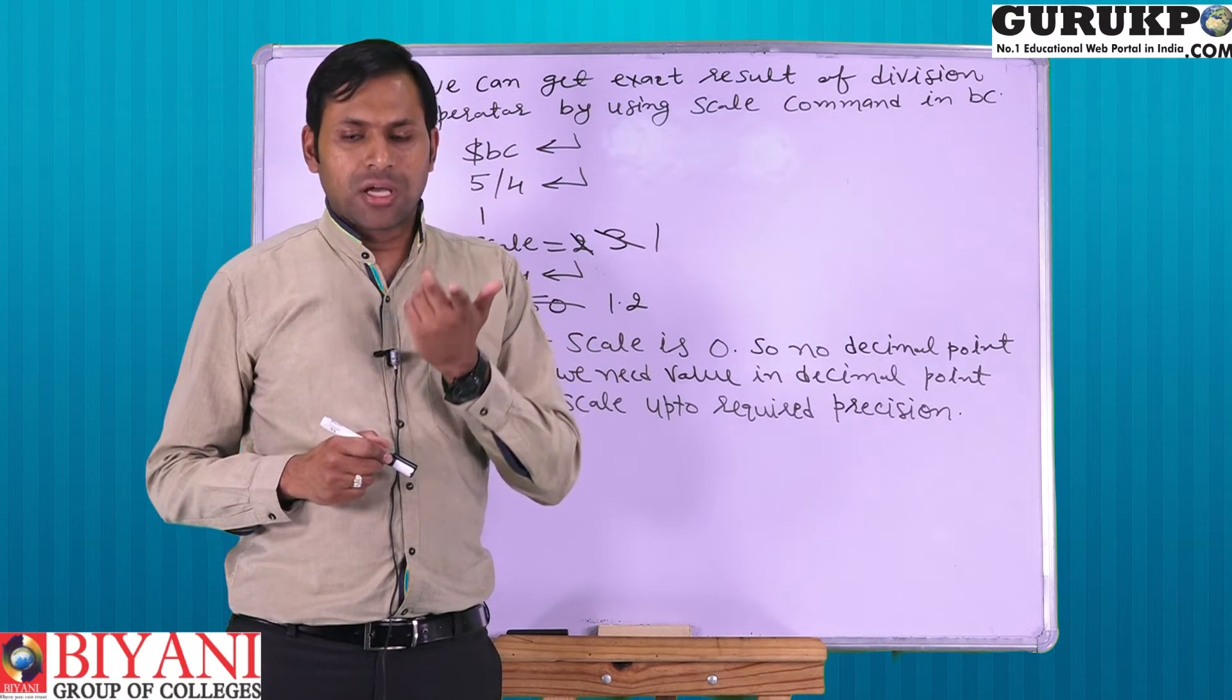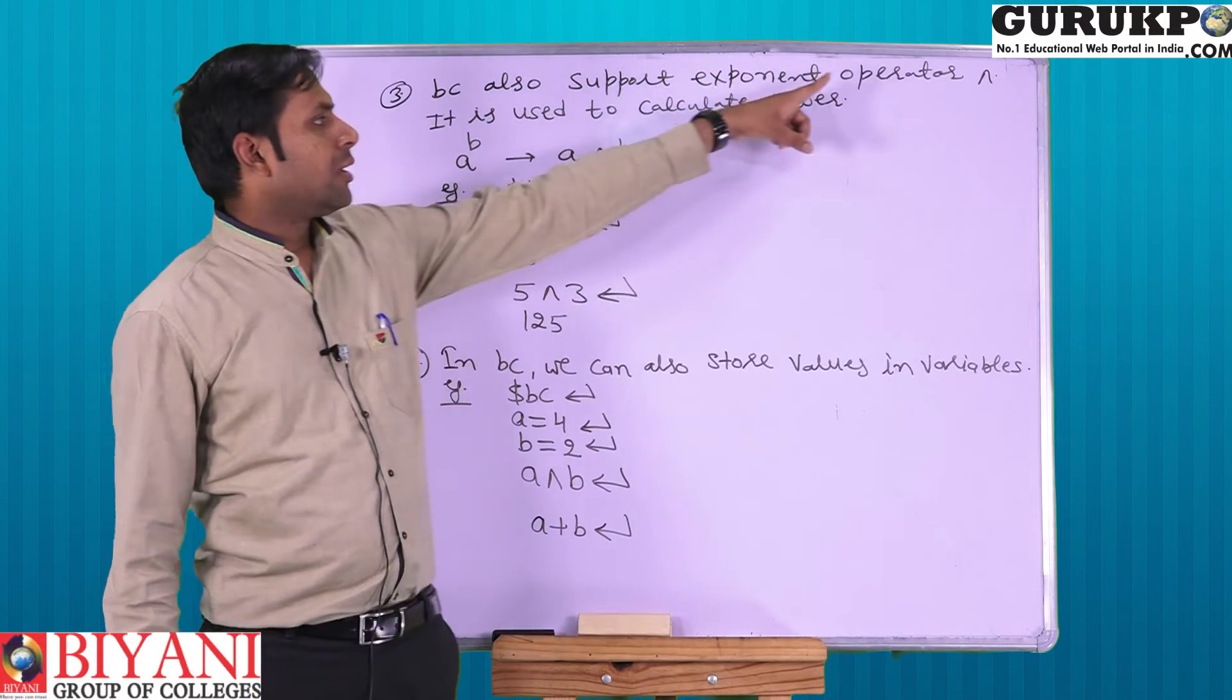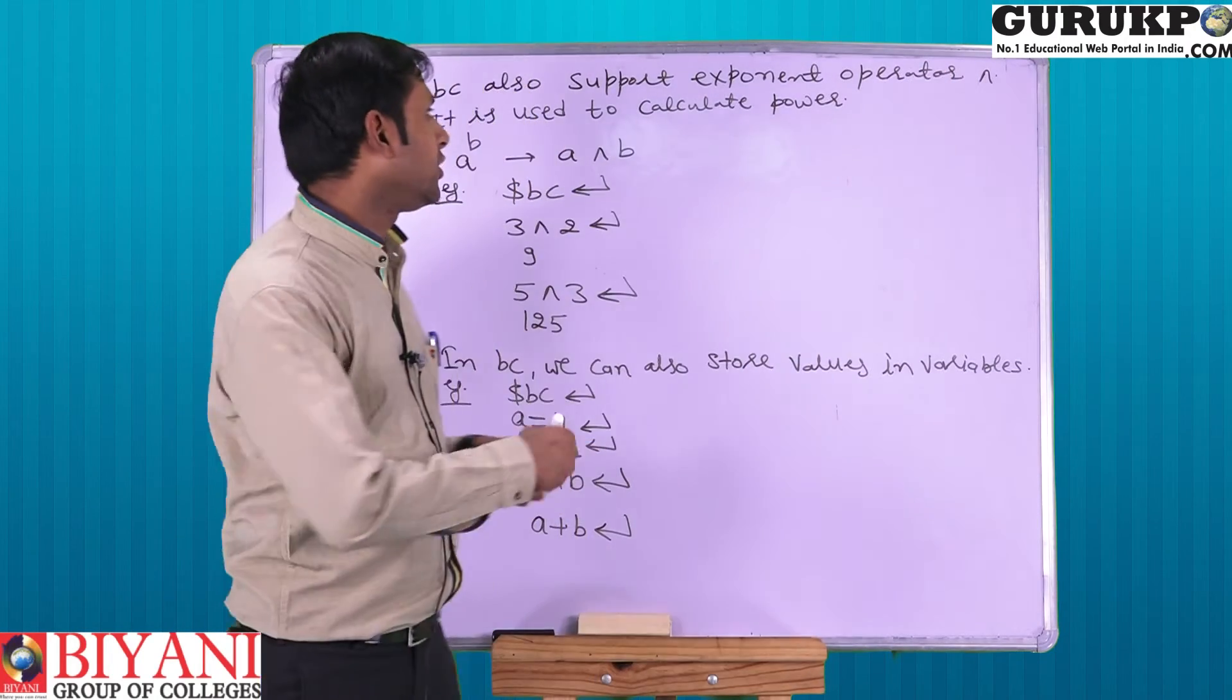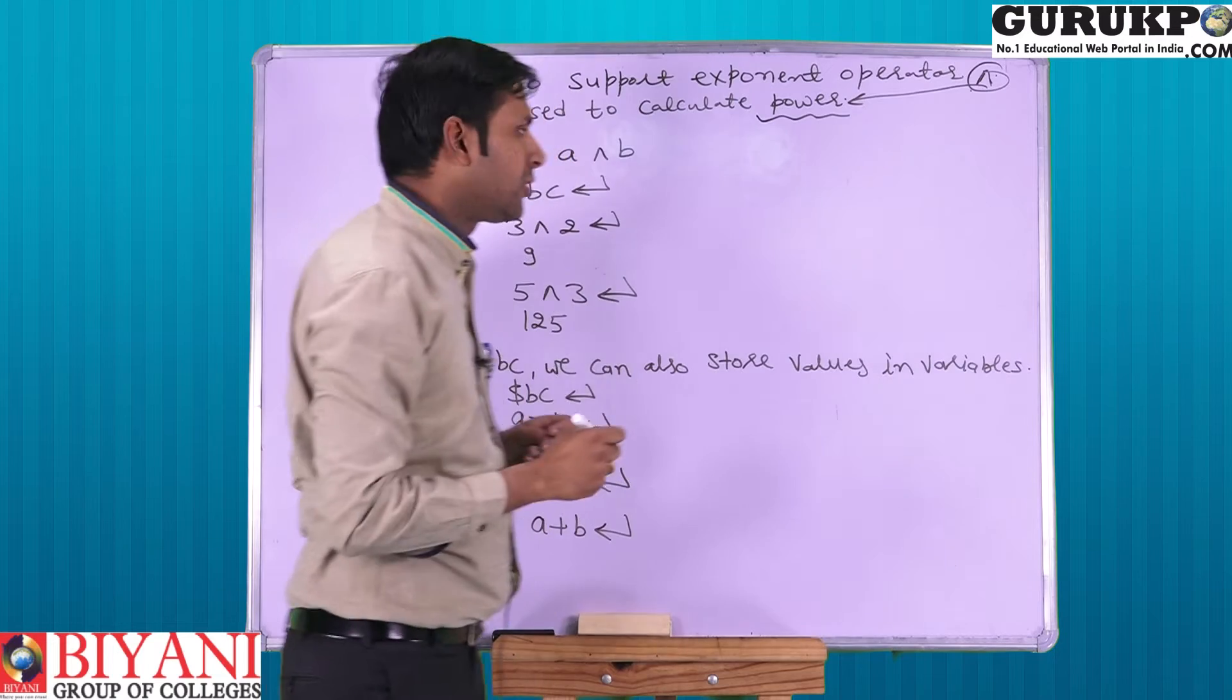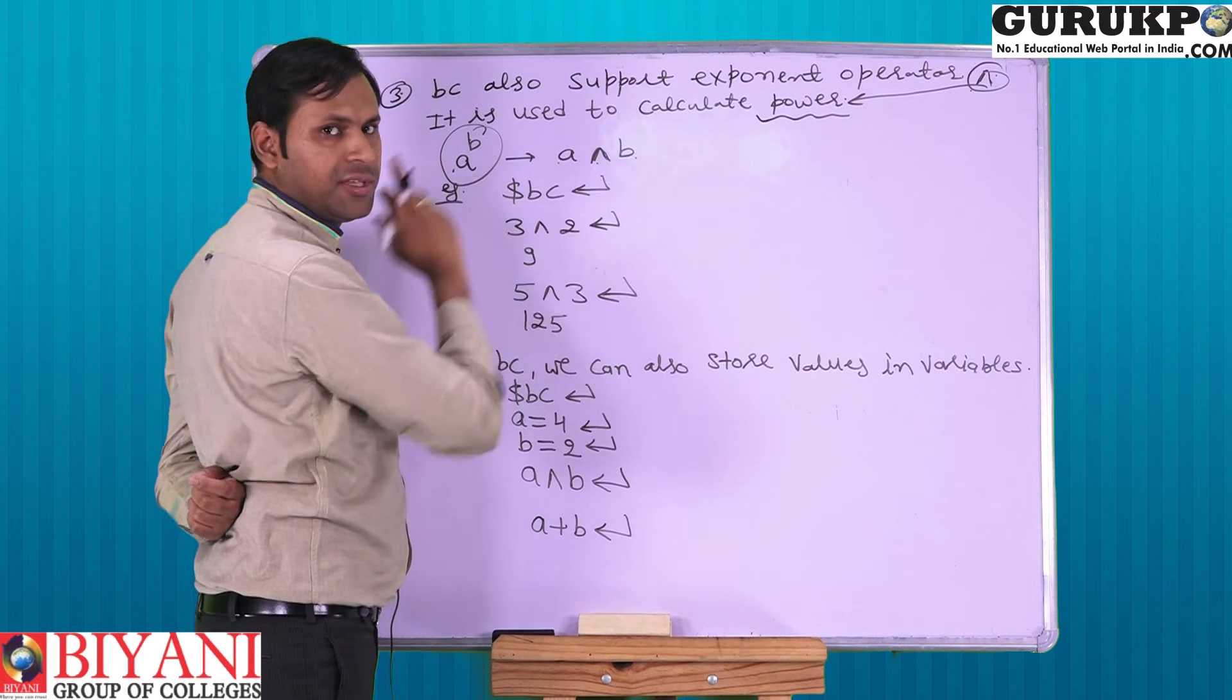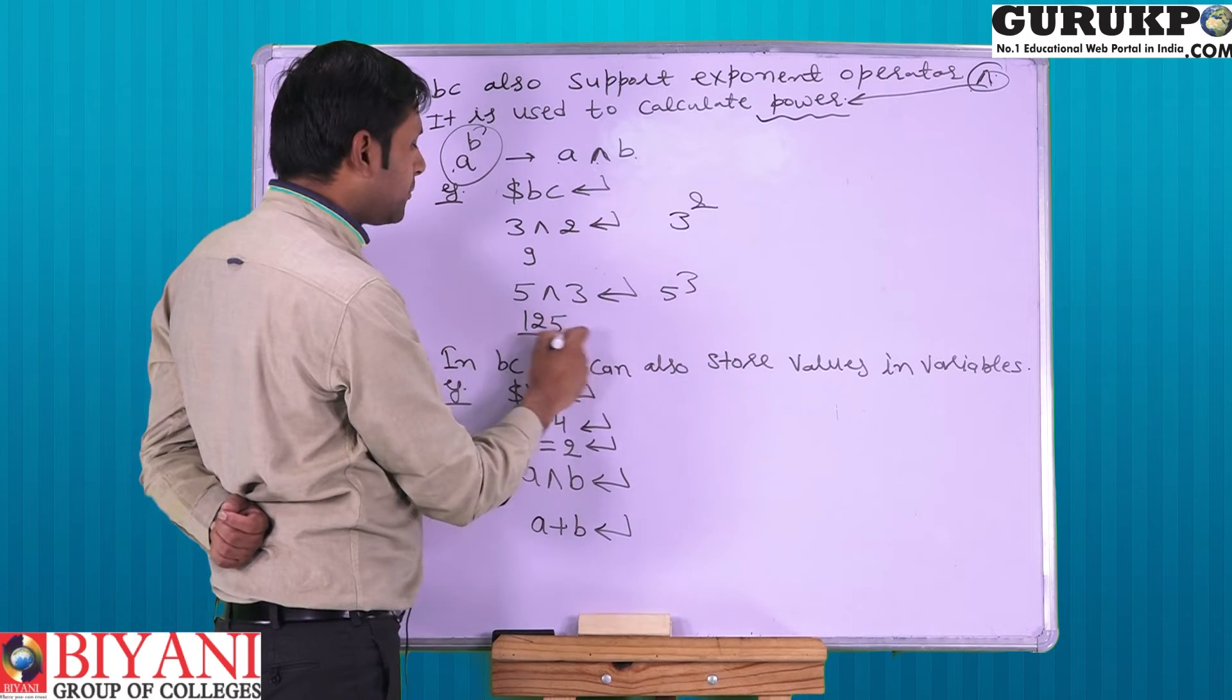Now we shift to the third task of basic command. The number third task which we can do by using BC is exponent operator. BC also has a special operator known as exponent operator which calculates power. Exponent symbol is used to calculate power. If we need a raised to the power b, then use symbol caret, a caret b, a exponent b. Like 3 caret 2, this means 3 square, 3 square is 9. 5 caret 3, this implies 125.